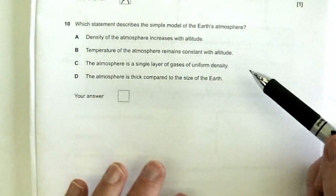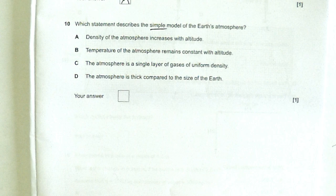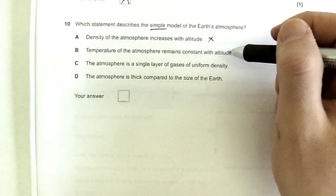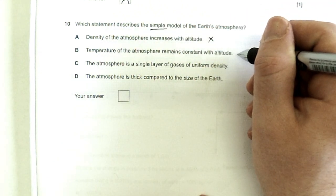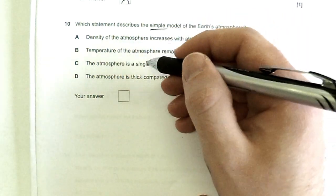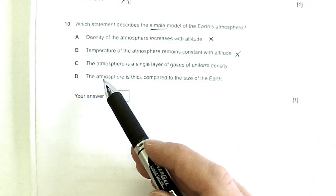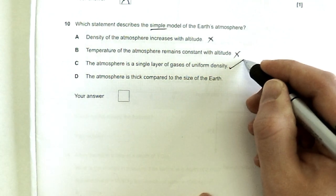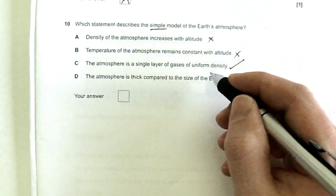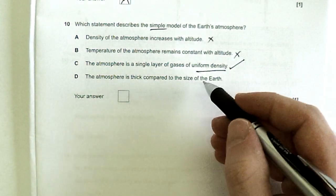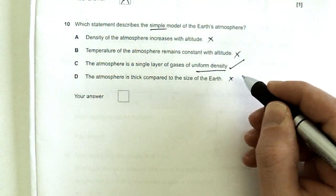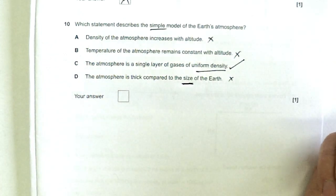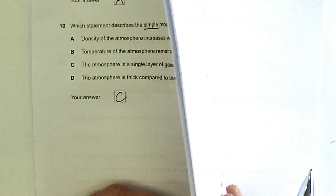Which statement describes a simple model of the Earth's atmosphere? The density of the atmosphere increases with altitude. No, it's not that. The density gets less as you go up. Temperature of the atmosphere remains constant with altitude. No, that's not really what it's driving at. It definitely gets colder as you go up. The atmosphere is a single layer of gas of uniform density. That seems pretty sensible. The idea that we're basically at the bottom of a big column of liquid, a column of fluid. And that fluid has a uniform density. The atmosphere is thick compared to the size of the Earth. That doesn't make sense. The atmosphere is a very thin thing, really. It's only really breathable up until about five miles. And the Earth is obviously much, much larger than that. So I'm going to go for C in this case, which is the correct answer, of course.